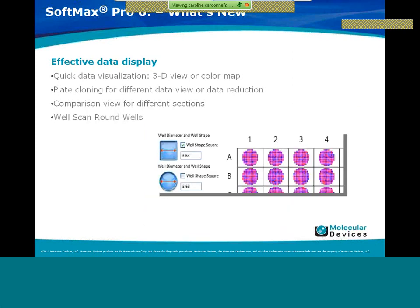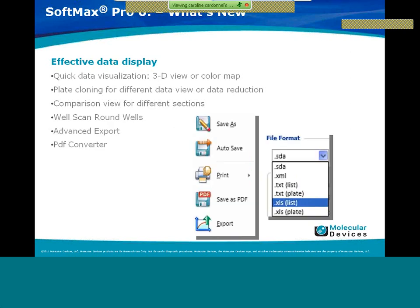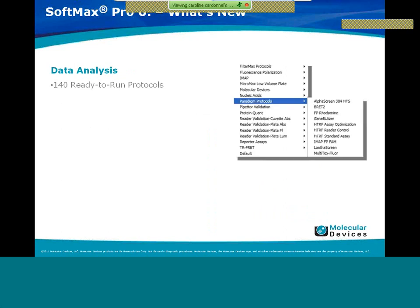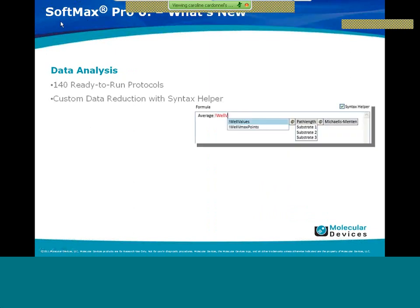The well scan will now allow you to select the shape of the well — either round or square. The advanced export and PDF converter make it easier to analyze data elsewhere or to export data without being linked to a printer. For data analysis, you have more than 140 ready-to-run protocols that can be customized further, accessed through the protocol library.